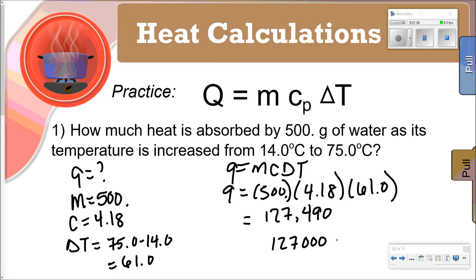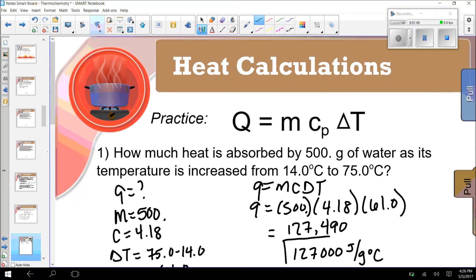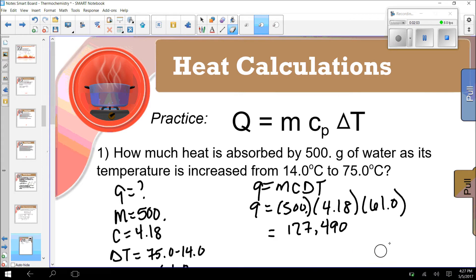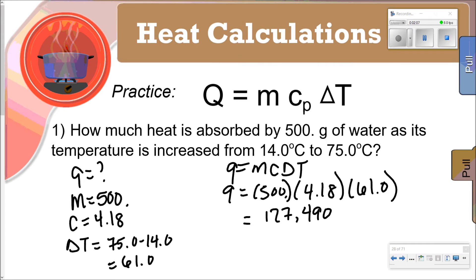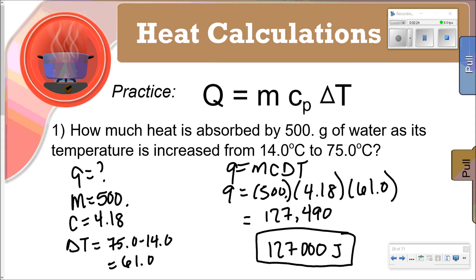With no decimal, the answer is 127,000 joules. Note that it's a positive number, so this is an endothermic process — heat is absorbed.